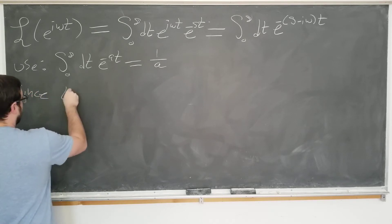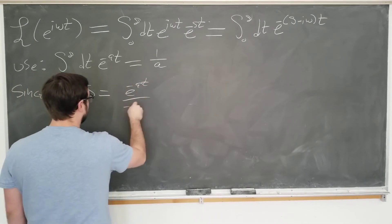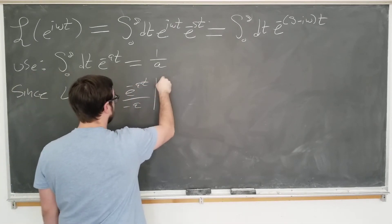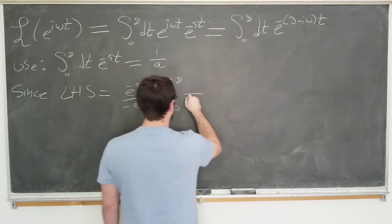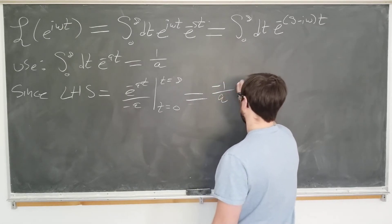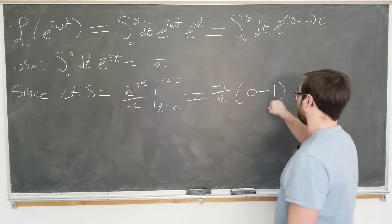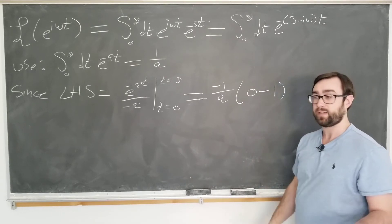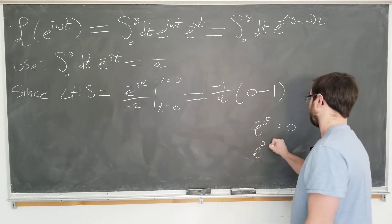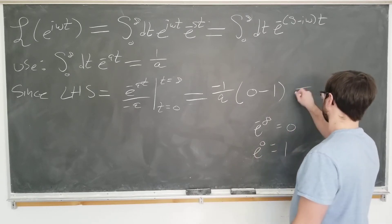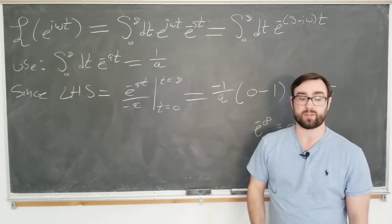We have the left hand side of this expression is equal to e to the minus a t over minus a, evaluated at t equals infinity and t equals 0. This becomes minus 1 over a times 0 minus 1, since e to the minus infinity is 0 of course, and e to the 0 equals 1. This just becomes 1 over a. I hope you can do this for yourself.